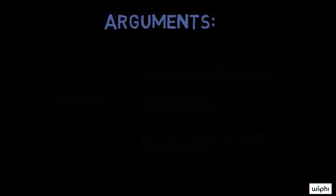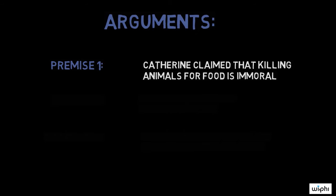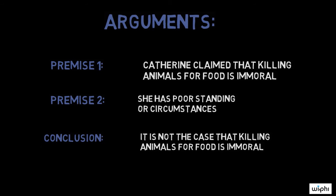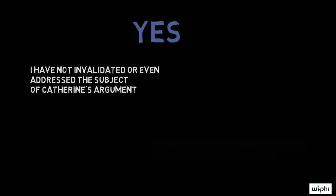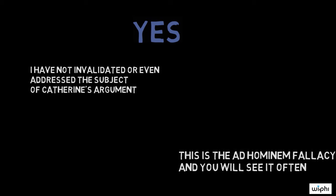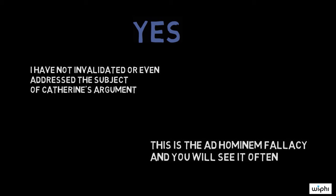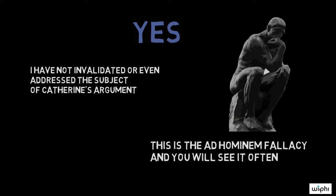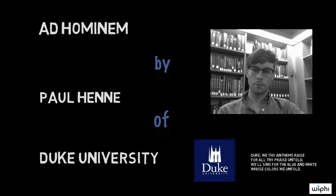Let's look at the fallacy in our general schema. The arguments I've been making against Catherine take the following form: premise one, Catherine claimed that killing animals for food is immoral; premise two, but she has poor standing or circumstance; conclusion, therefore it is not the case that killing animals for food is immoral. I have not invalidated or even addressed the subject of Catherine's argument — rather, I personally attacked her standing and character. This is the ad hominem fallacy, and you will see it often. It is important to note that philosophers have many questions about when a person's standing and character are relevant to an argument, but we will have to save those questions for another video.